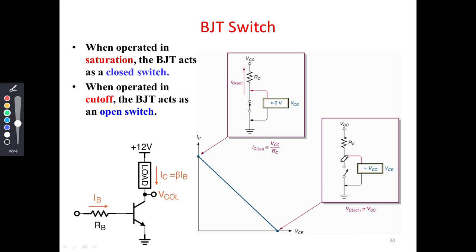If I try to measure the voltage at this point, I will have some voltage because no current is flowing. So Vcc is approximately present here — there will be a small drop across RC practically. If we subtract the voltage drop across RC, we can see that approximately the Vcc voltage will appear at this point. If we measure the voltage from this point to ground, the voltage equals Vcc, which is also equal to Vce, because at this point Vce equals Vcc. We have already seen this in the load line equation.